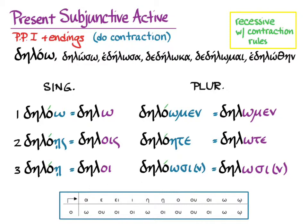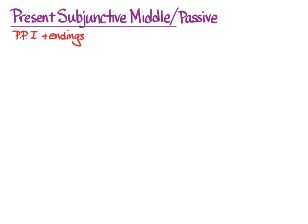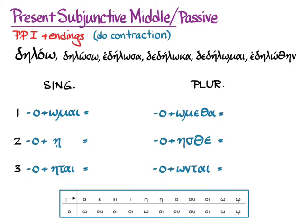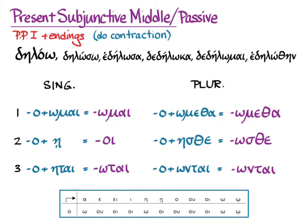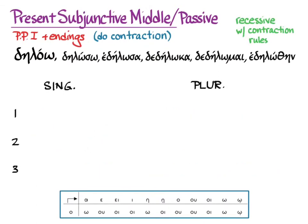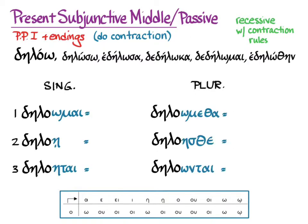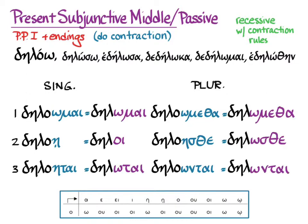With the accent applied, those are the contracted forms. For the present subjunctive middle/passive, first principal part and endings: omicrons with the endings we know become ōmai, oi, ōtai, ōmetha, ōsthe, ōntai — recessive accent with contraction rules. Applied to delao, the stems and subjunctive middle/passive endings contract to give: dēlōmai, dēloi, dēlōtai, dēlōmetha, dēlōsthe, dēlōntai.